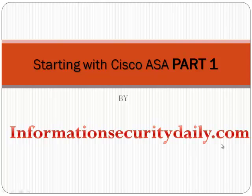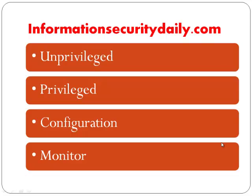A Cisco Security Appliance has 4 Administrative Access Modes. Unprivileged Mode is the mode available when you first access the security appliance, and it provides a restricted view of security appliance settings. Privileged Mode enables you to change the current settings. Any unprivileged command also works in Privileged Mode.